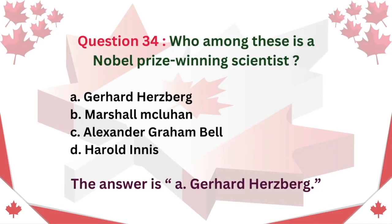Question 34: Who among these is a Nobel Prize-winning scientist? A. Gerhard Herzberg. B. Marshall McLuhan. C. Alexander Graham Bell. D. Harold Innes. The answer is A: Gerhard Herzberg.